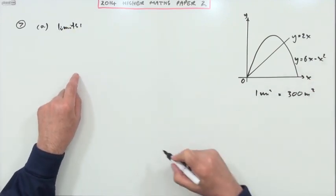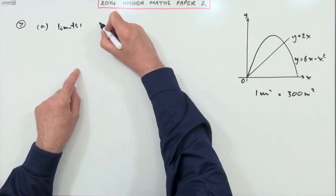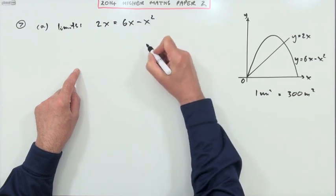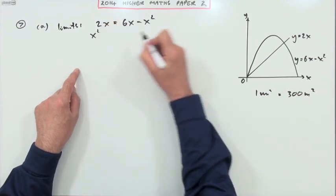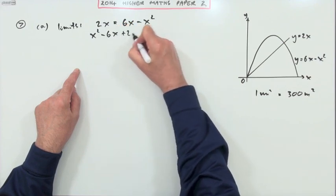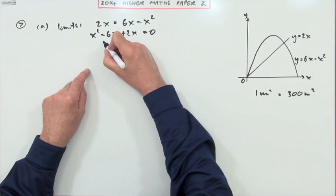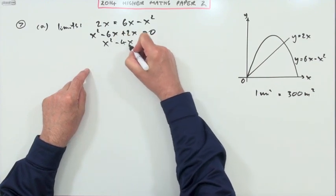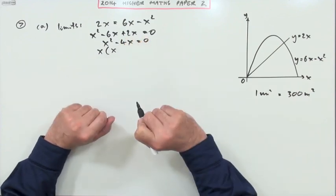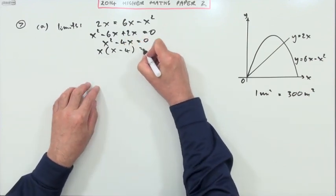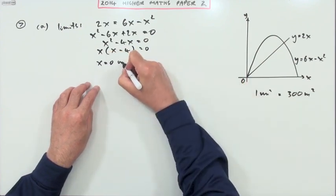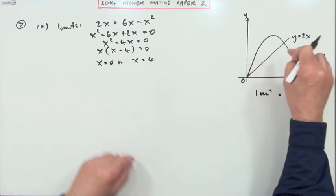For my limits, I would have 2x equals 6x minus x squared. Flip over to the side: x squared minus 6x plus 2x equals 0, so x squared minus 4x equals 0. That factorizes quite nicely to x times (x minus 4) equals 0. So x equals 0, which I knew, or x equals 4, which is what I want.